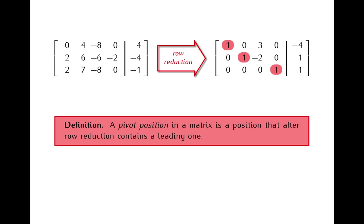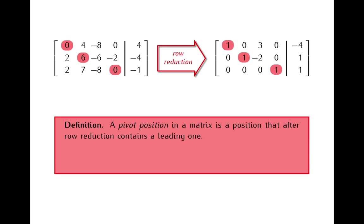We will say that a pivot position in a matrix is a position that after a row reduction contains a leading one. In our example here, after a row reduction we have three leading ones, and this gives us three pivot positions in the original matrix. The second part of this definition tells us that a pivot column of a matrix is simply a column that contains a pivot position.